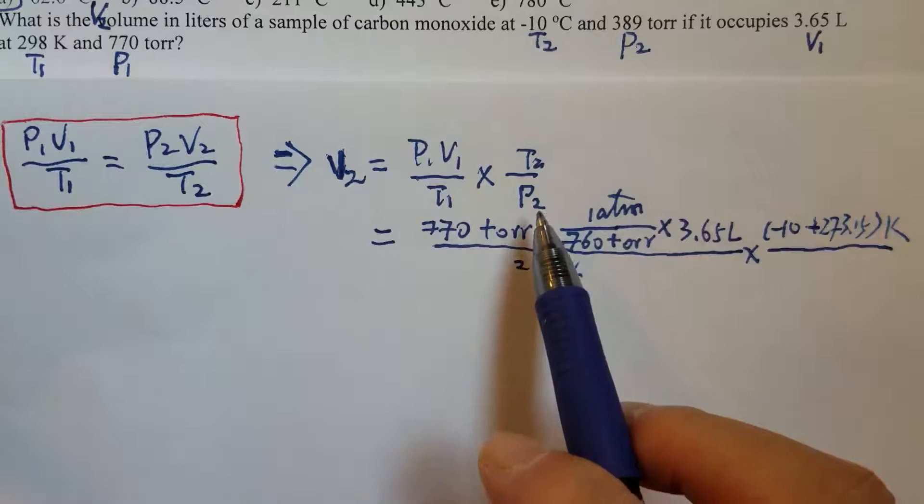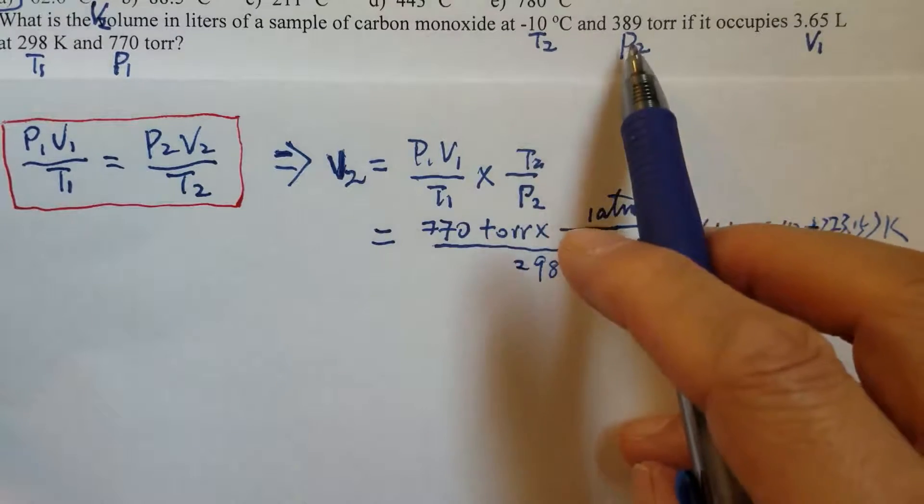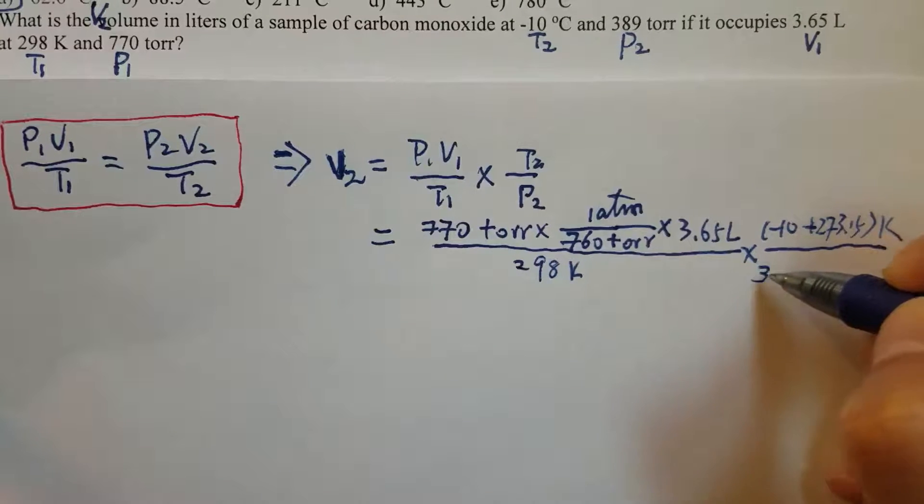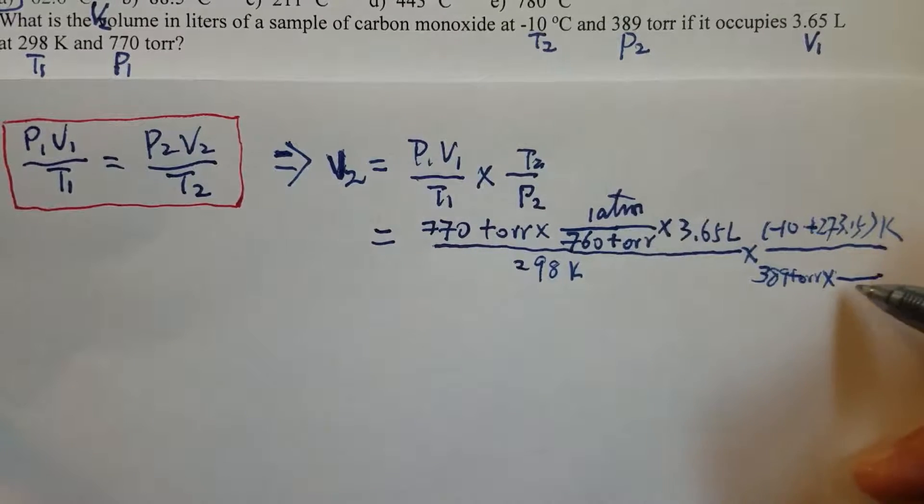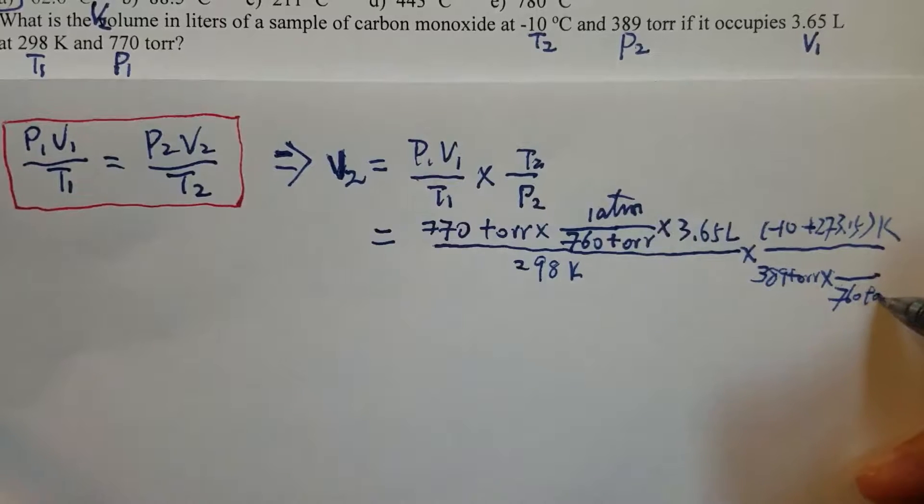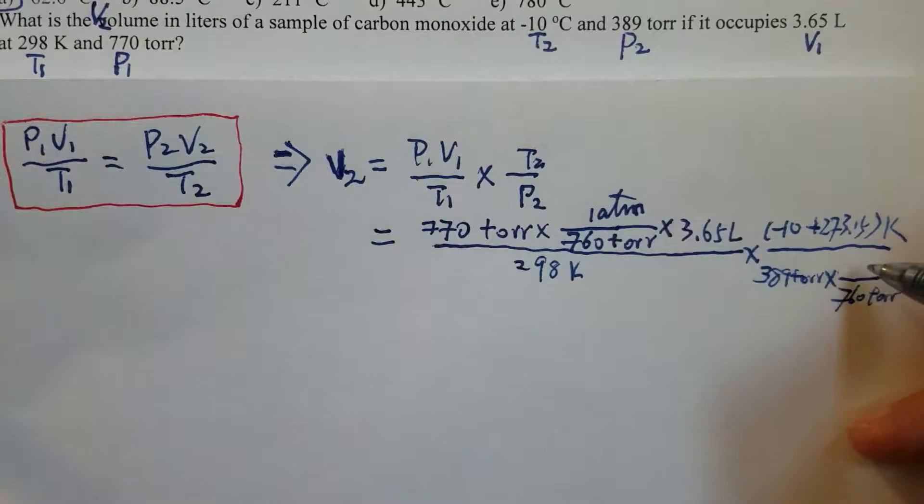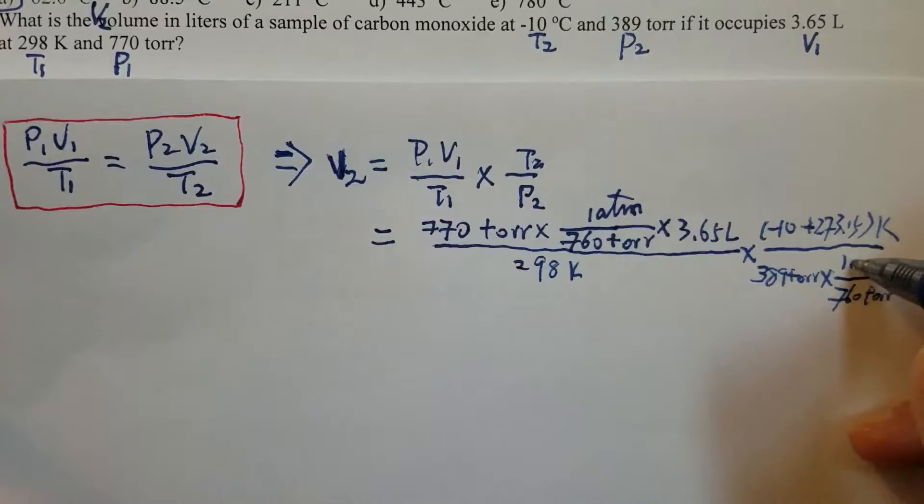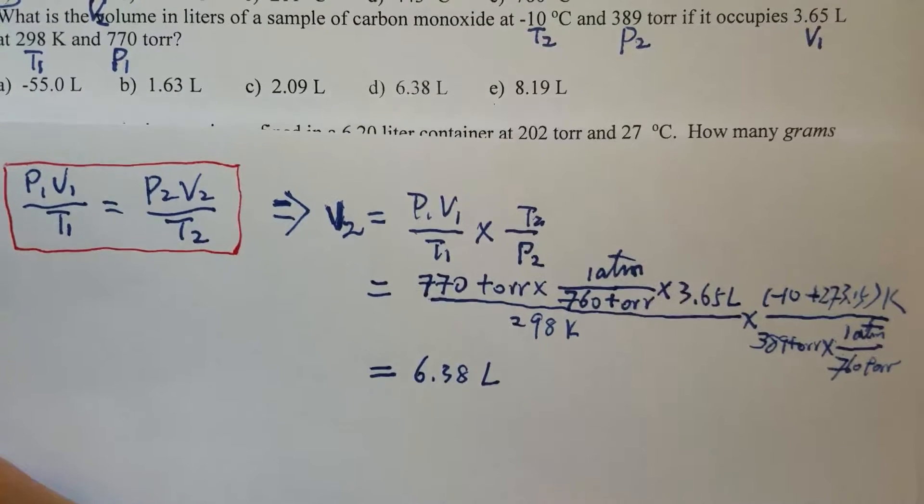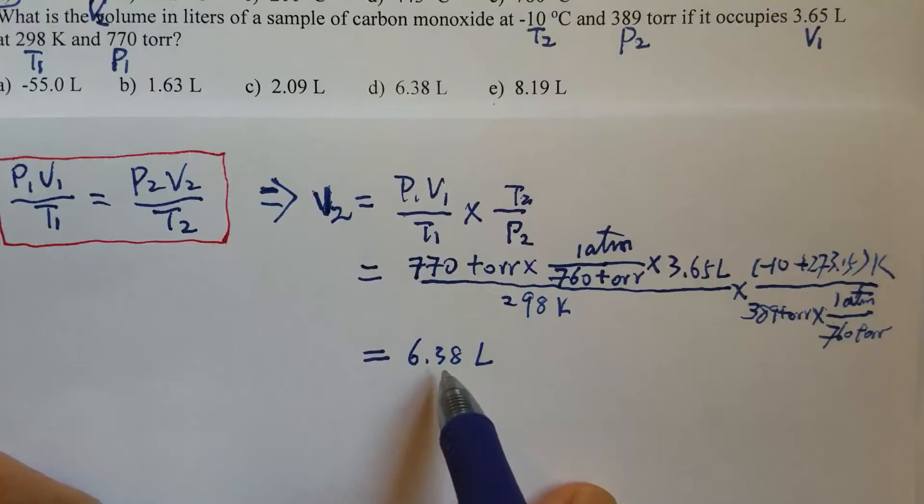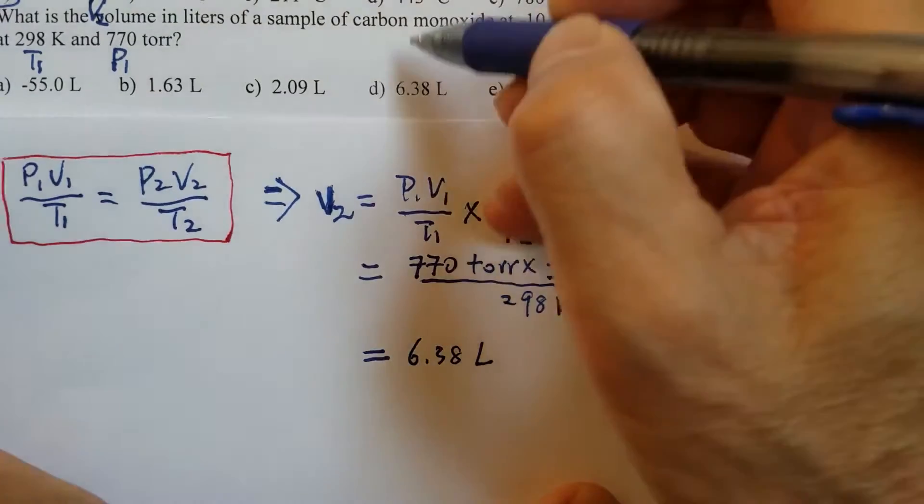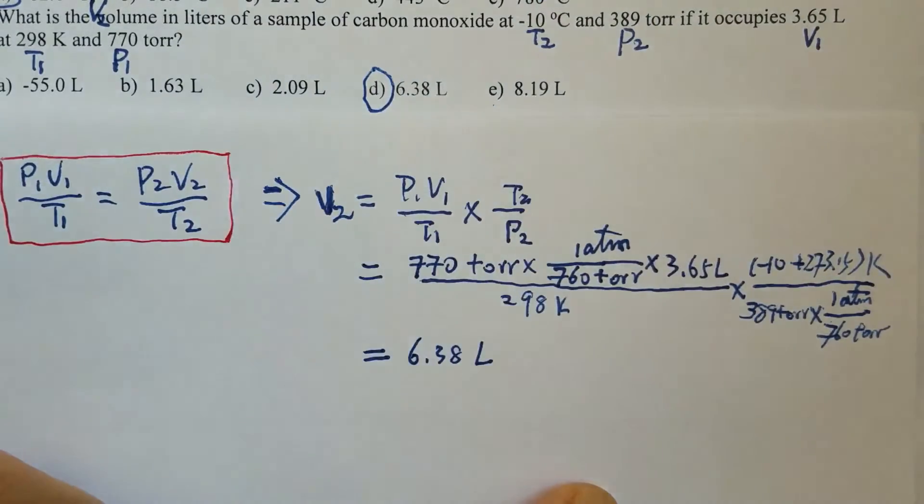P2, 389 Torr. We need, again, to convert that from Torr to Atmosphere. So, the answer is 6.38 liters. D is the answer for this question.